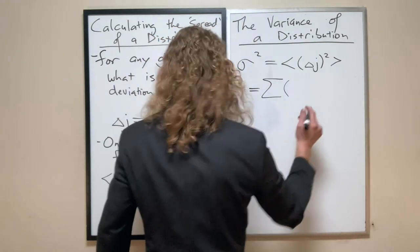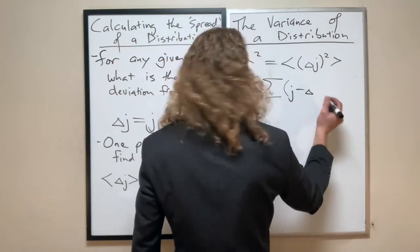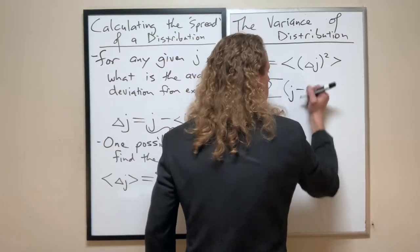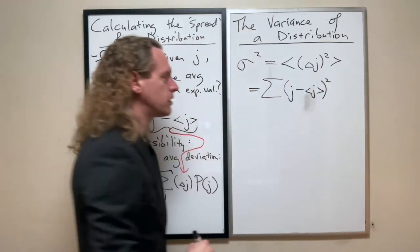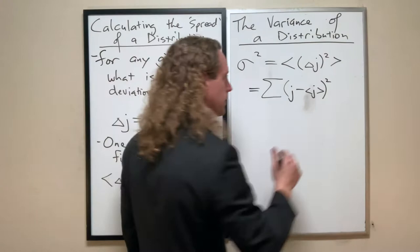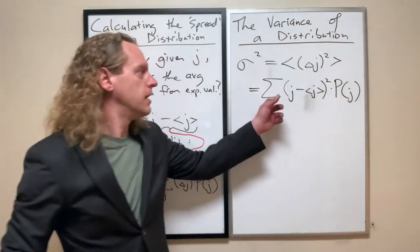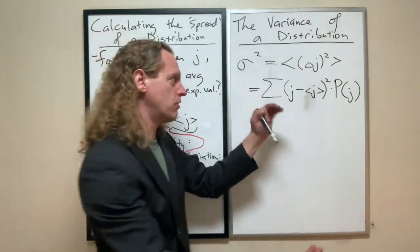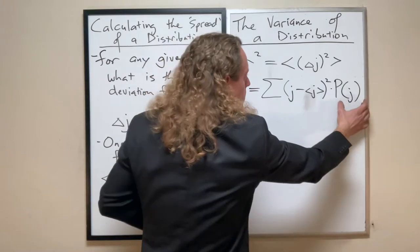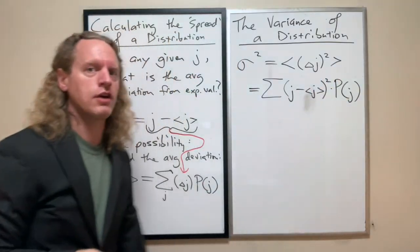So what we're going to do now is we're going to take that defining formula for anything with brackets around it, and we're going to use it. We're going to take that guy, j minus the expectation value of j squared times probability of j. All of that, by the laws of summation, all of that is within the sigma. This changes as j changes.